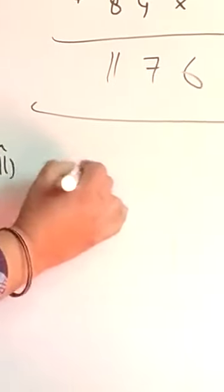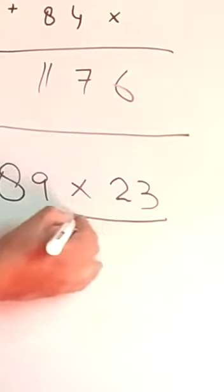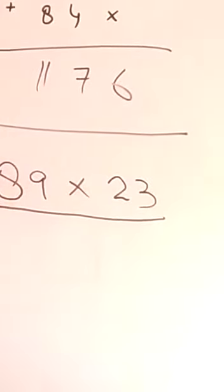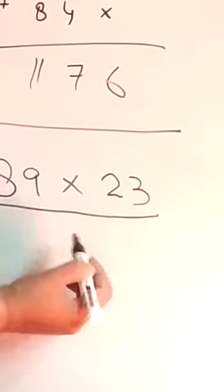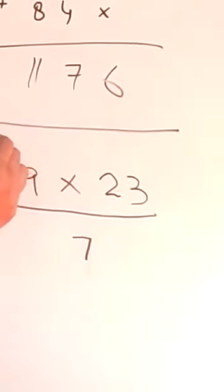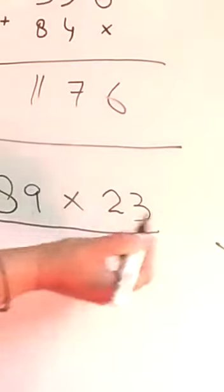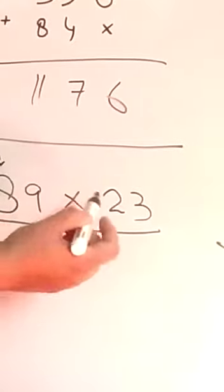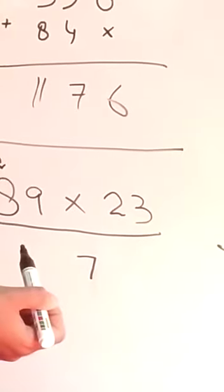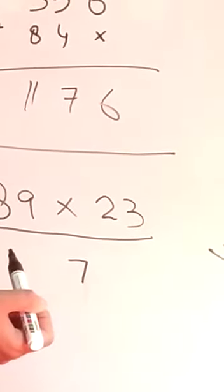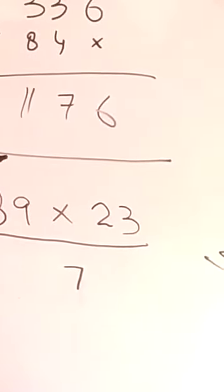Ab ek aur example lete hain. Humare paas hai 89 into 23. Yahan par yeh do digit hain, inko multiply hum karenge. Pehle digit ke saath multiply karenge: 3×9 is 27 — yahan par 7 lagega, 2 jayega. Ones ki position par ones ka digit lagega, tens ki position par jayega. 3×8 is 24, plus 2 carry — ho gaya 26.